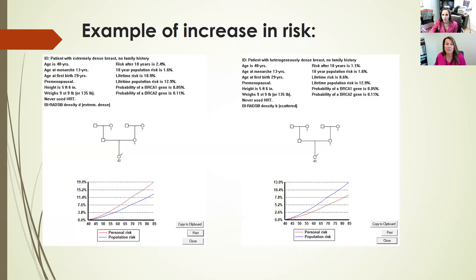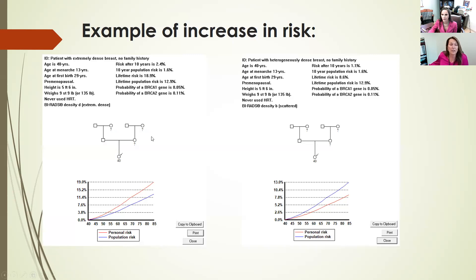Let's talk about risk and what dense breast tissue does to your risk. If we look at these two risk assessments side by side, the patient in both is identical — a 40-year-old woman with no family history, who started her period at 13, had her first birth at 29, is premenopausal, average height and weight, never used hormone replacement therapy, and has no family history of breast or ovarian cancer. The average lifetime population risk for this woman is 12.9%. However, she happens to have extremely dense breast tissue — category D density.